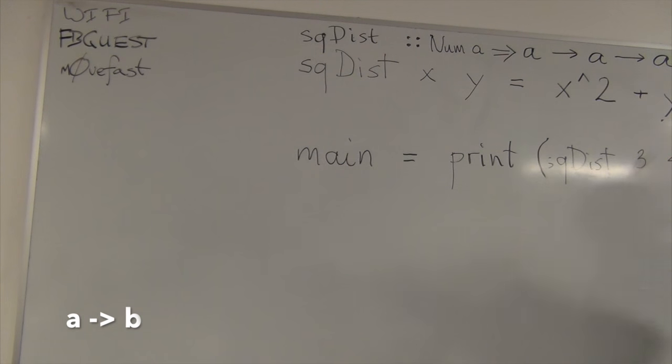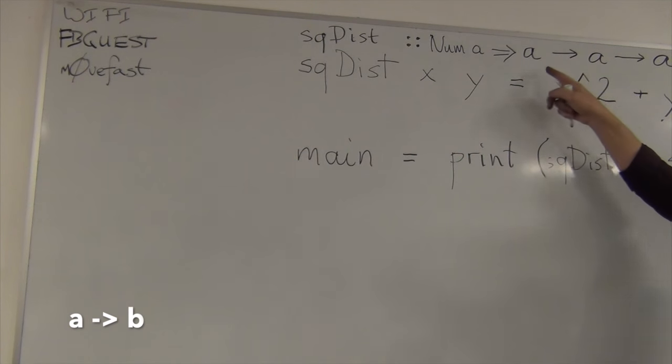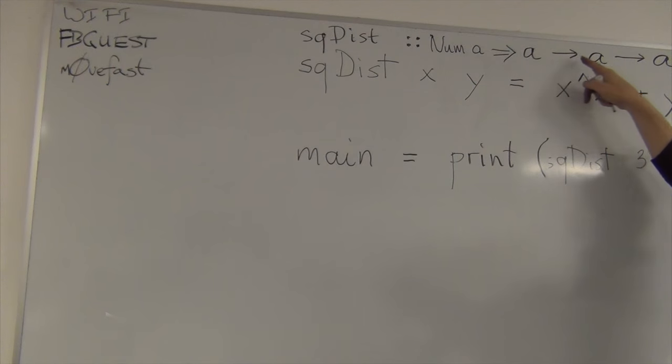But here we have these two arrows, one after another. Okay? So, the simplest way of understanding it, without getting into currying, is to say, you read this as sqdisk is a function that takes two arguments of type A and another of type A and returns a name. So, this is like using this rule engine to understand the language. That's just the rule. The rule is, if you have multiple arrows, then all of them are separating arguments. And the last thing, after all the arrows, is the return type.